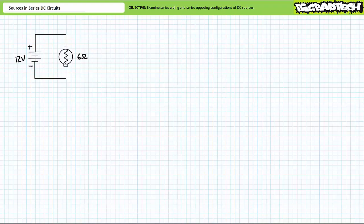Good day and welcome to Big Bad Tech. I'm your instructor Jim Pytel. Today's topic of discussion is series arrangements of DC sources. Our objective is to examine DC sources in series aiding and series opposing relationships. Additionally, we'll explore advanced applications of Kirchhoff's voltage law.